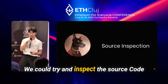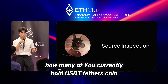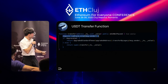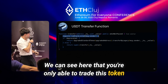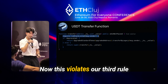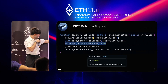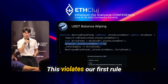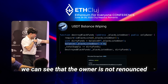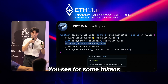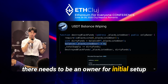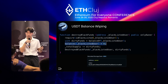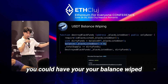We could try and inspect the source code. How many of you currently hold USDT, Tether's coin? Let's have a look. We can see that you're only able to trade this token if you're not blacklisted — this violates our third rule. We can also see that once you get blacklisted, the owner has the power to wipe your balance — this violates our first rule. Finally, the owner is not renounced. For some tokens there needs to be an owner for initial setup, but then that role is renounced by setting the storage variable to 0x0 or 0xdead. That's not the case here, so in theory you could have your balance wiped.